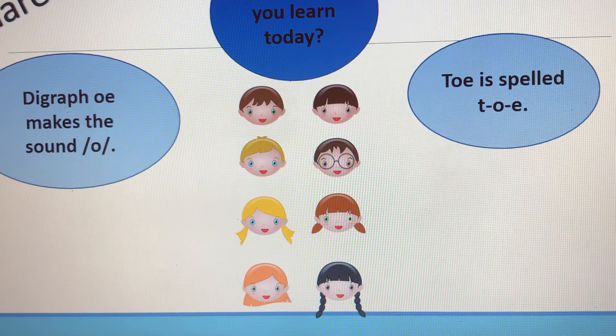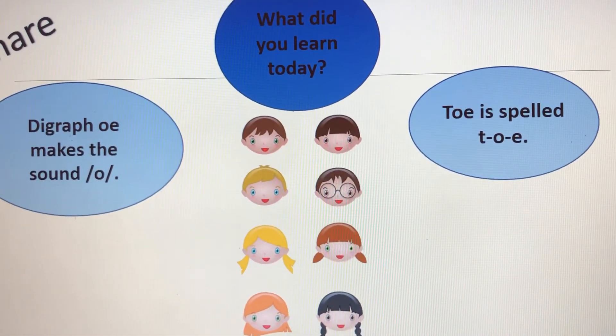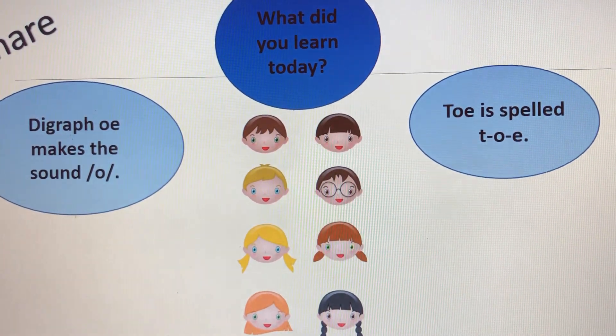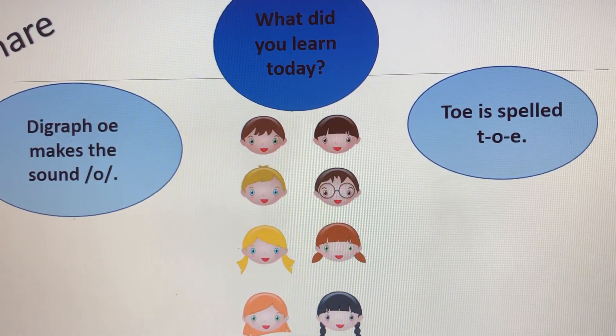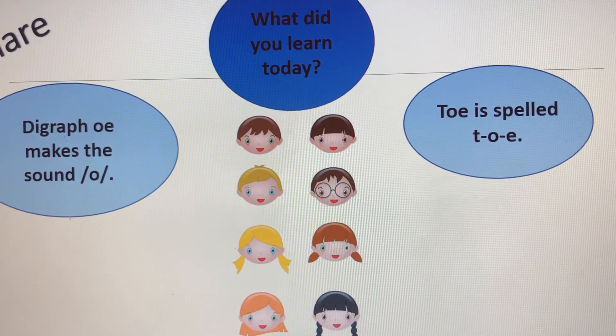What did you learn today? Digraph OE makes the sound O, and toe is spelled T-O-E. Good job.